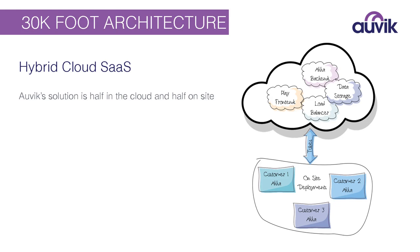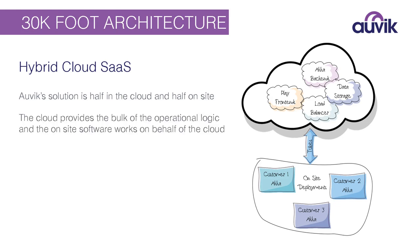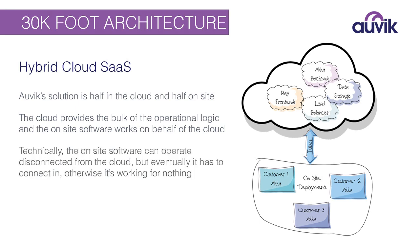The architecture is software as a service — a hybrid cloud solution. The bulk of the logic lives inside the cloud. We have a Play front end that sits behind our load balancers, which talks to a series of backends that are largely ACA-based. Then we have clustered data storage. In order to discover customers' networks, we need to deploy what we call an on-site agent. These agents are also written in Scala with ACA, and they're meant to run autonomously since they can be disconnected from the cloud.